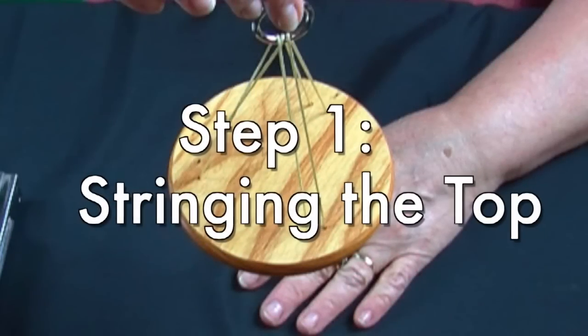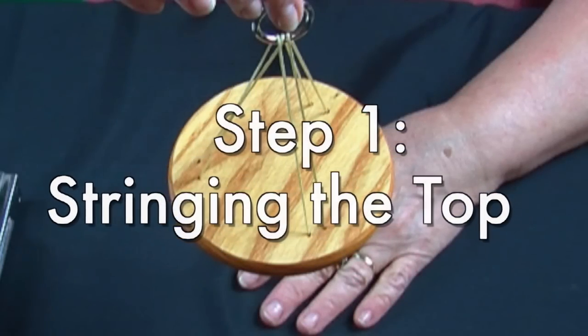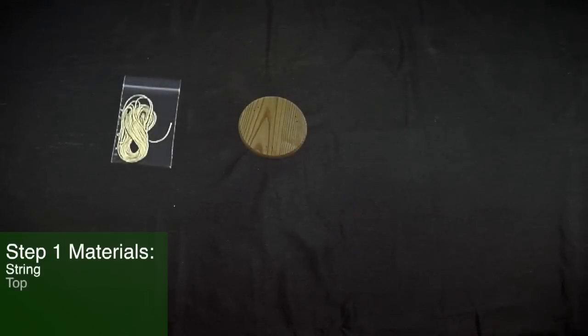Okay, we're ready to begin. We'll start by stringing the top strings on the chime top. For this step, we will be using string, a wood chime top, a hanging ring, your upholstery needle, and scissors.